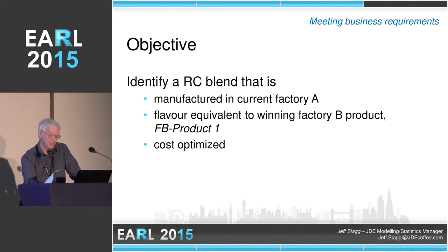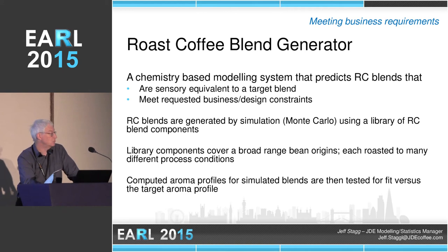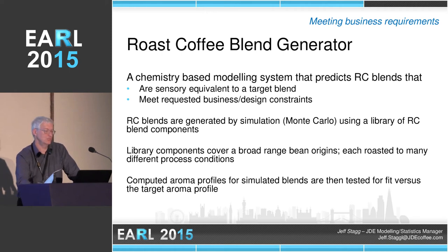I'm going to use the blend generator application to do that. The blend generator is a chemistry-based modelling system that predicts roast coffee blends that are sensory equivalent to a target blend, but also meet the business and design constraints that we want to impose on it. The roast coffee blends are generated through simulation — Monte Carlo — using a library of roast coffee components.